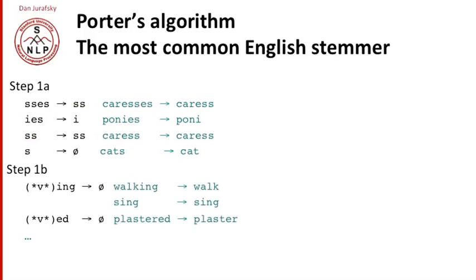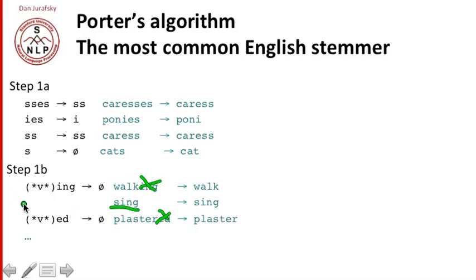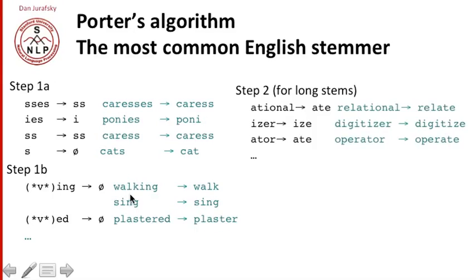Similarly, in step 1b, we remove all the ings and eds. So we want to cross off the 'ing' of 'walking' and the 'ed' of 'plastered.' But the Porter stemmer specifies carefully that only words with a vowel before the 'ing' get their ing removed. A word like 'sing,' which has no extra vowel before the ing, stays as 'sing.' But 'walking,' which has a vowel before the ing, is allowed to delete the suffix. So if a word has a vowel followed by ing, the ing is deleted.